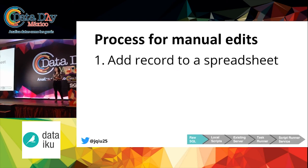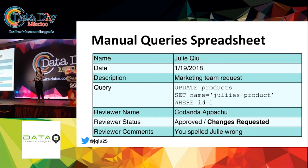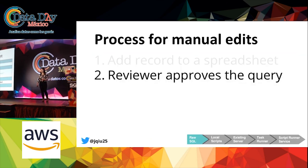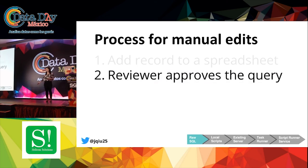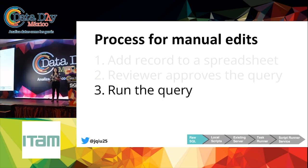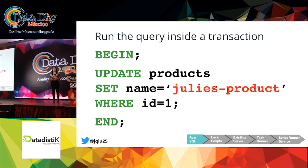Here's what the checklist looks like. First, I add a record to the spreadsheet including my name, the date, a description of the query and why I'm running it, and the query itself. I'd also record who I want to review it — that person will look at the query and either approve or request changes. In this case, my coworker noticed I spelled Julie wrong, made that comment, and I went ahead and fixed it. Once the reviewer approves, you can run the query. We ask everyone to run their manual edits inside a transaction so that if they notice a mistake halfway through, it's easy to just roll back.